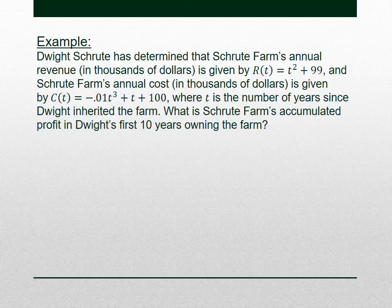After that brief intermission, I just wanted us to get warmed up to some word problems that are Office-themed. Let's look at an example: Dwight Schrute has determined that Schrute Farm's annual revenue in thousands of dollars is given by R(T), and its annual cost in thousands of dollars is given by C(T). Here T is the number of years since Dwight inherited the farm. What is Schrute Farm's accumulated profit in Dwight's first 10 years of owning the farm?